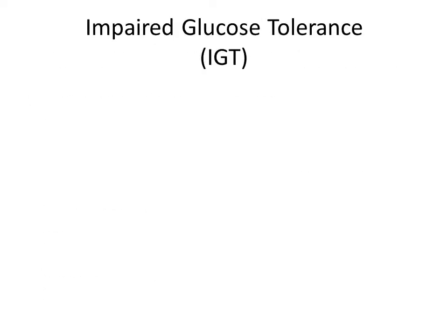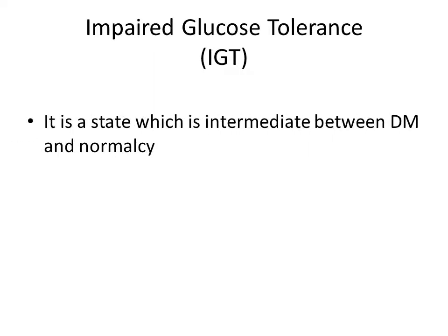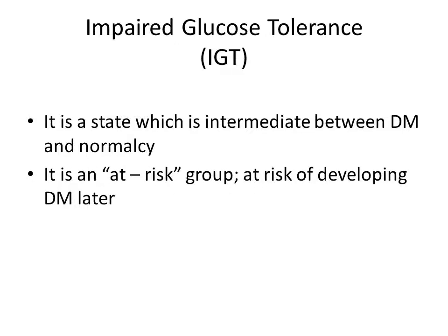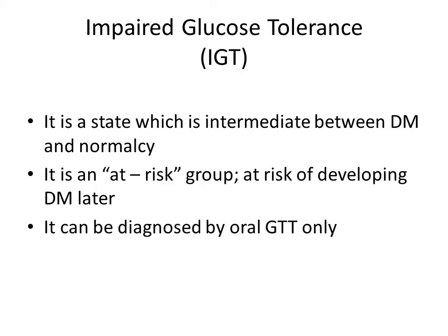Impaired glucose tolerance is a state which is not frankly diabetes but is not normal either — the blood glucose is slightly high. This is an at-risk group that is at risk of developing diabetes mellitus later on, and it can be diagnosed only by oral glucose tolerance test.